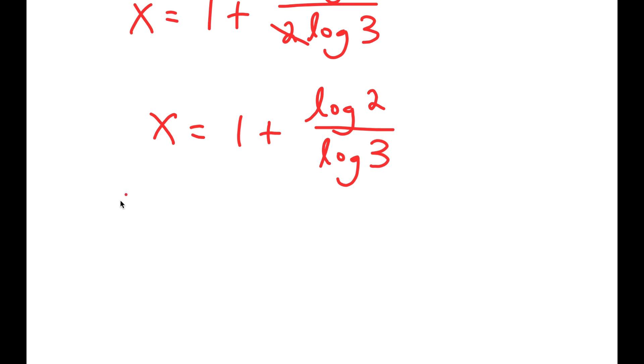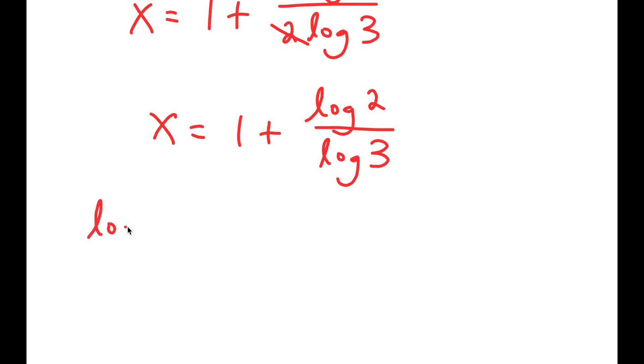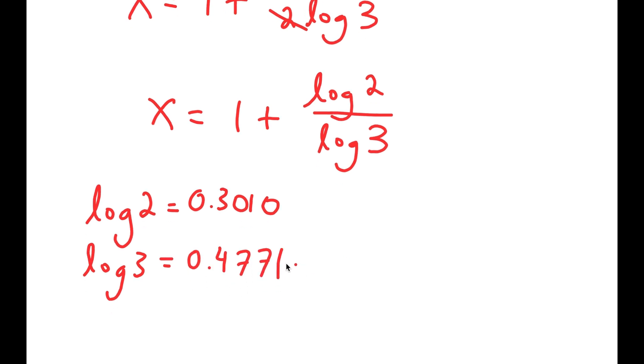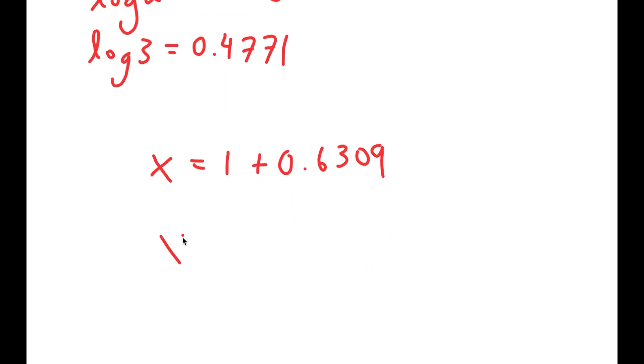So now from here, log of 2 is equal to 0.3010, and log of 3 is equal to 0.4771, meaning x is equal to 1 plus 0.301 over 0.4771, which is equal to 0.6309. So 1 plus 0.6309 is 1.6309. So this is my solution.